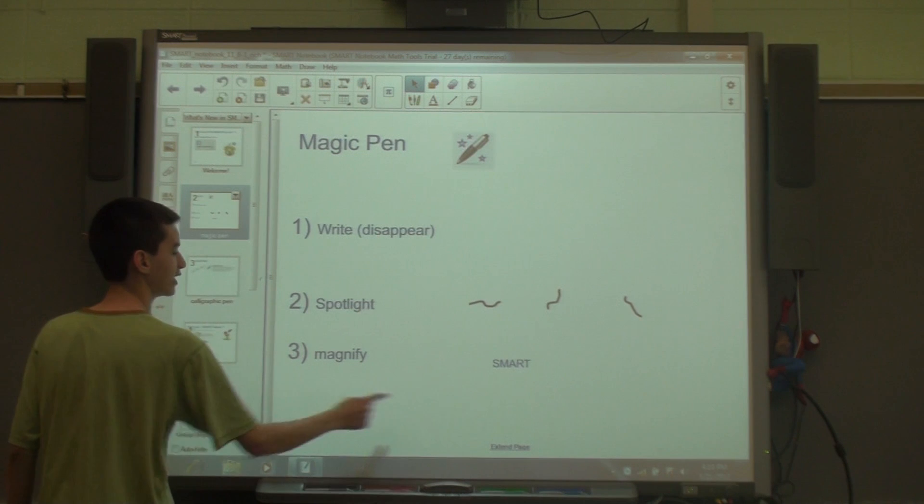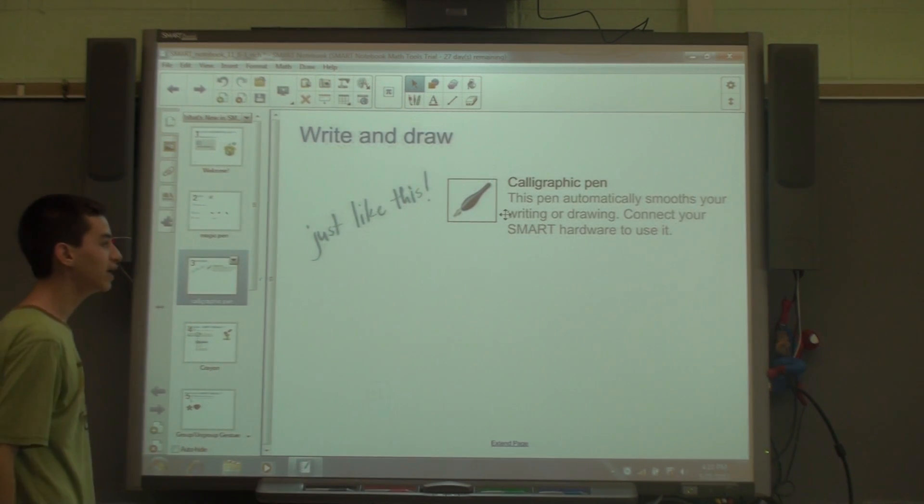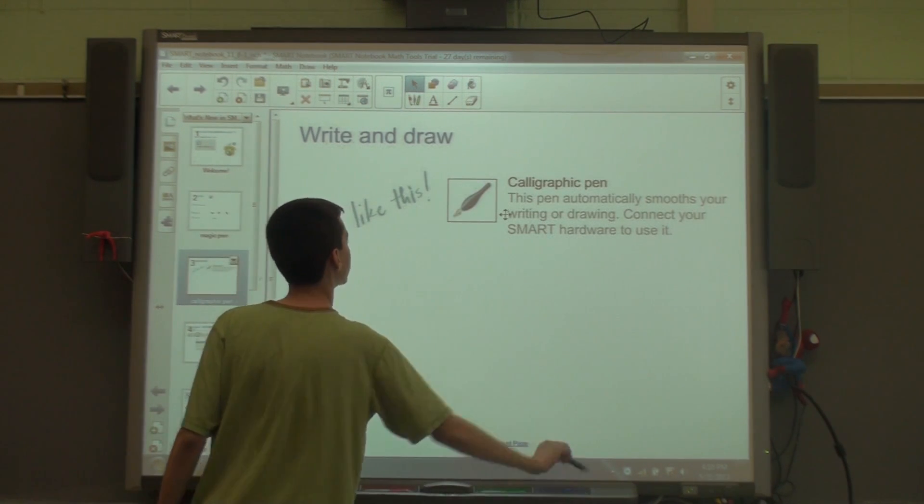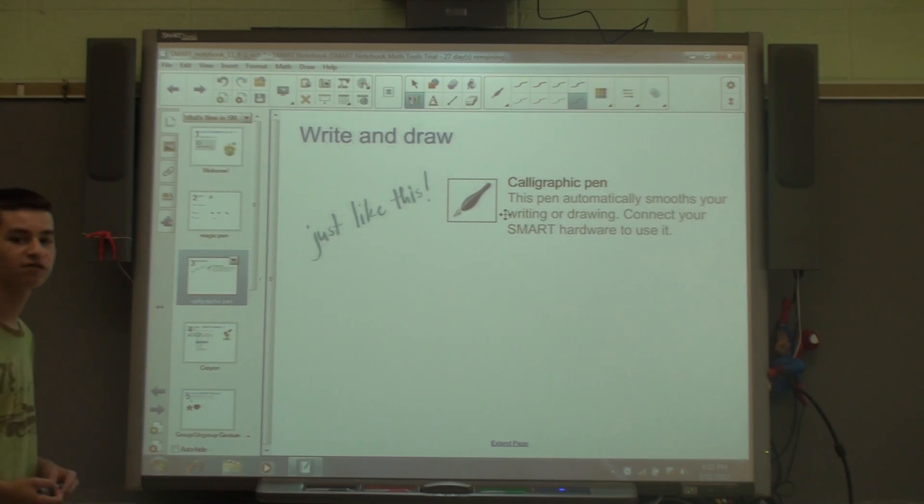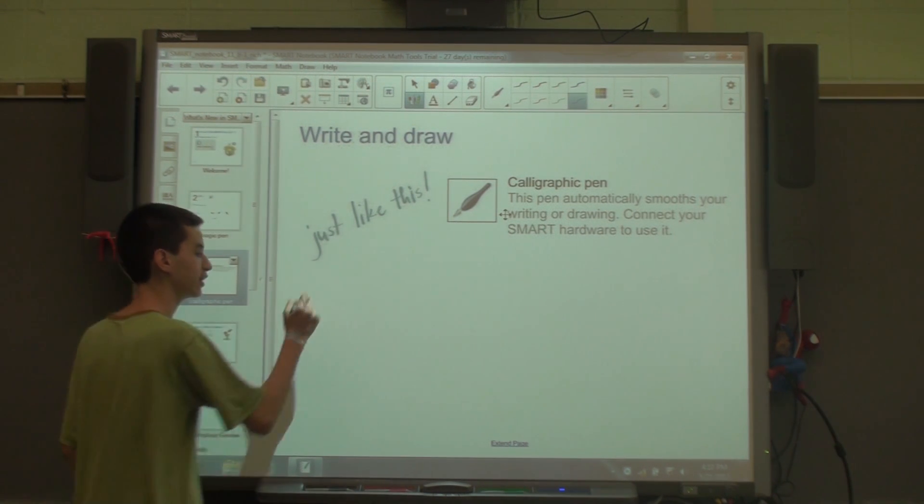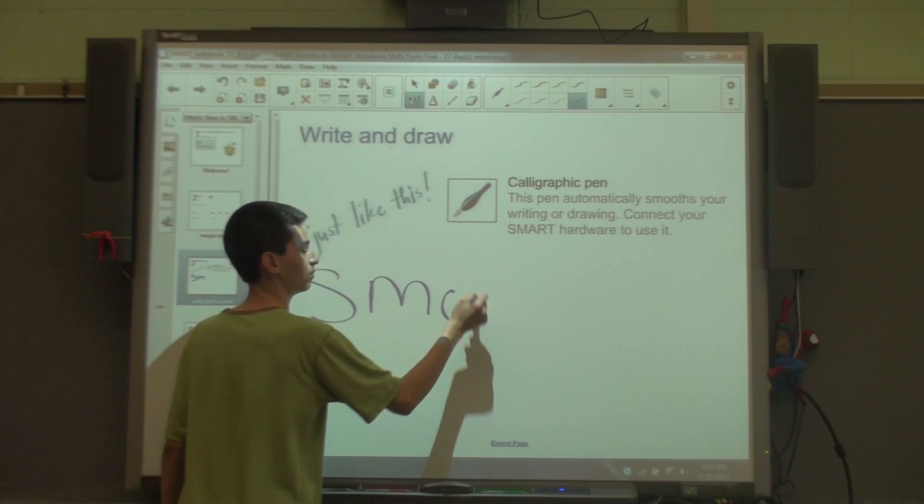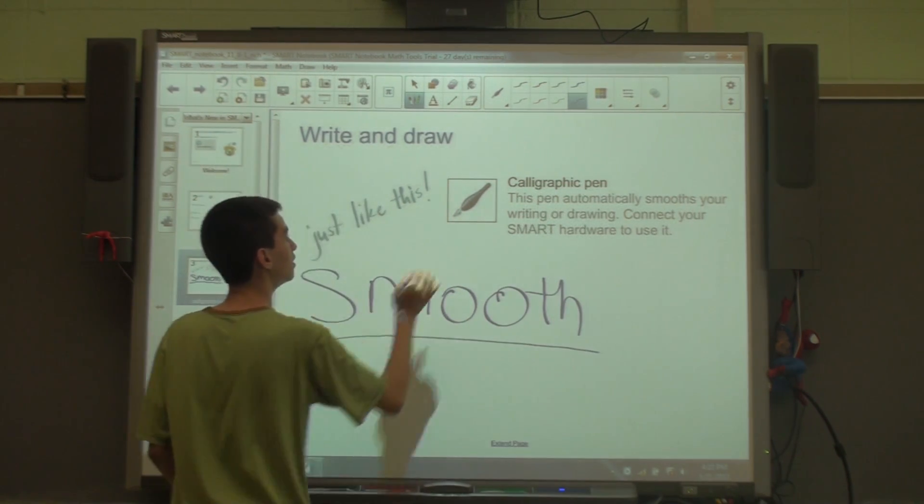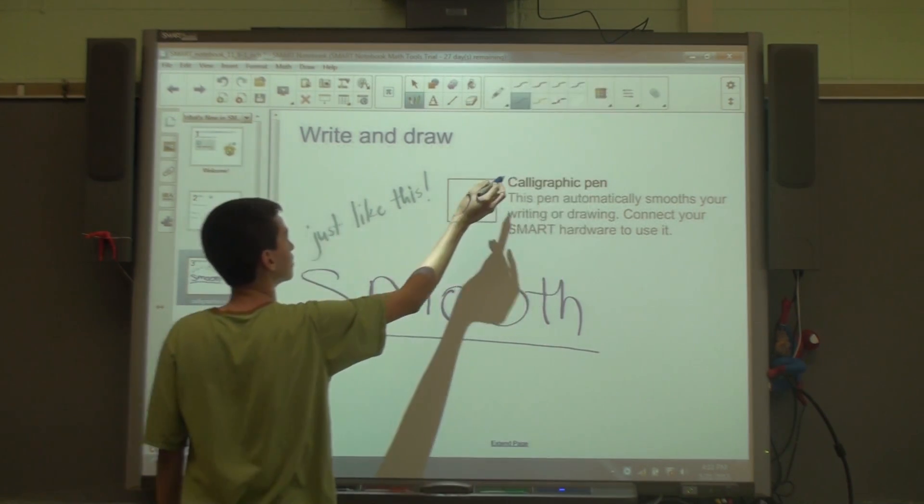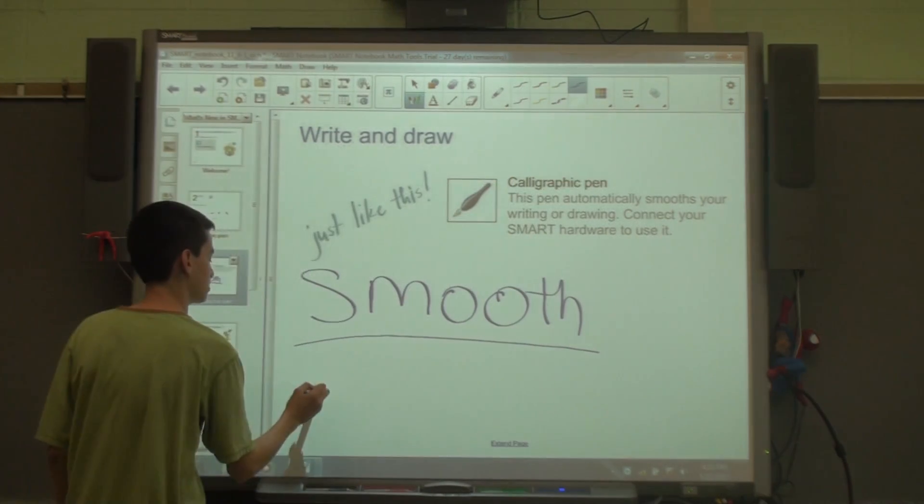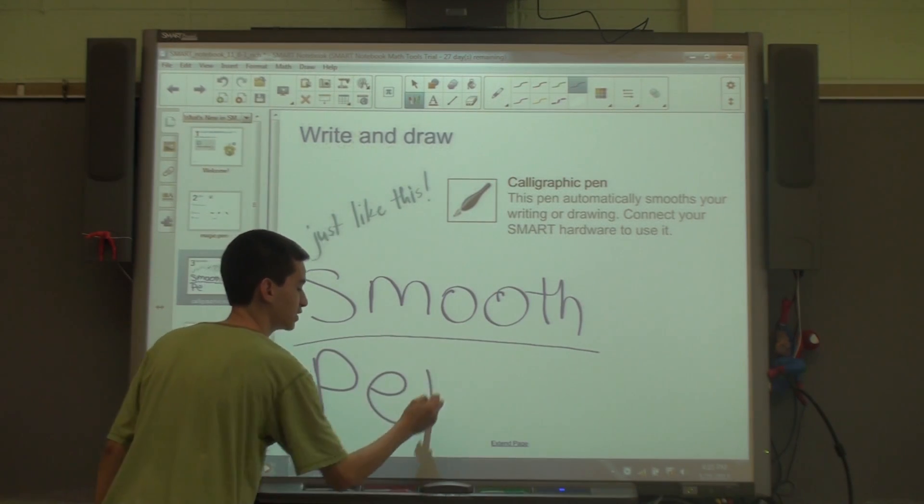Right to left, I go to my next page. The new pen on Smart Notebook 11 is the new calligraphic pen. The calligraphic pen automatically smooths your handwriting. So this is the calligraphic pen, and the regular pen looks like this. It's a big difference.